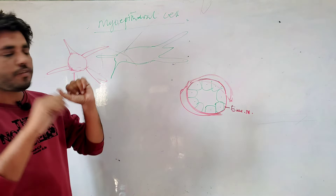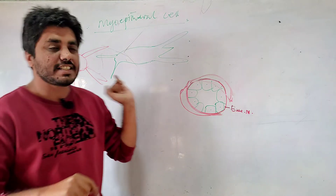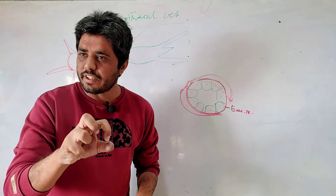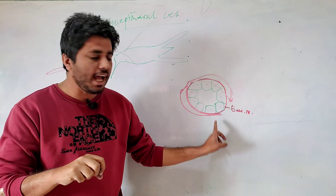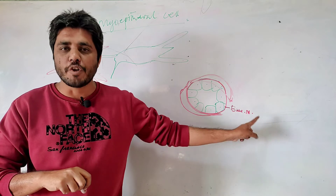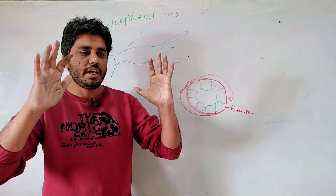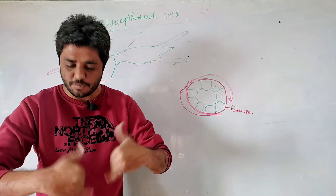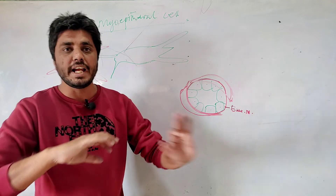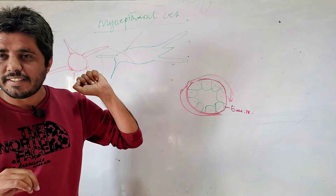Muscle cells do contraction, and so these myoepithelial cells also do contraction — to produce secretion, especially the release of secretion. The release from the cell then release from the gland. The procedure of releasing the secretion is helped by myoepithelial cells.